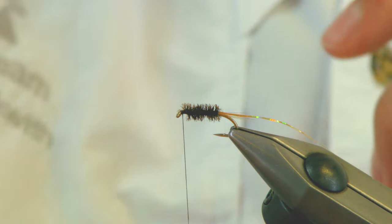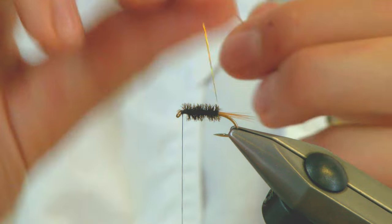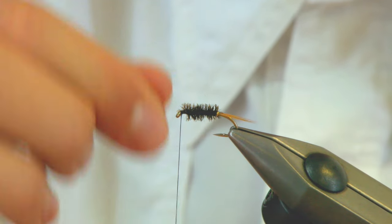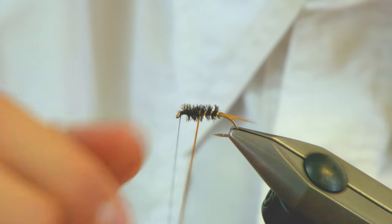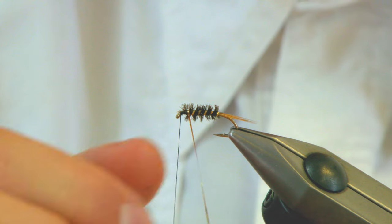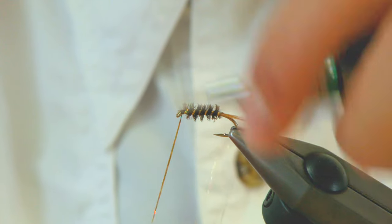Now with your rib, because you wrap your peacock herl towards you, you're going to wrap the rib the opposite way. Now this will lock the peacock herl and make it more durable, but also allow you to see the rib a little bit better.